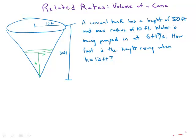This is a standard related rate problem — volume of a cone. We have an upside-down conical tank with a height of 30 feet and a maximum radius of 10 feet. Water is being pumped into it at 6 cubic feet per second. We want to know how fast the height of the water is rising when the height is 12 feet. The rate given, cubic feet per second, is dV/dt, and what we're looking for is dh/dt.